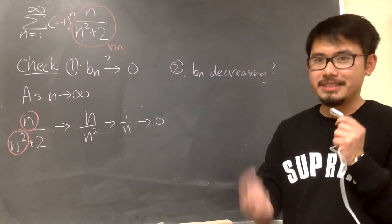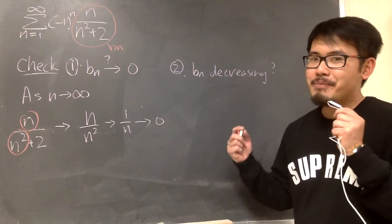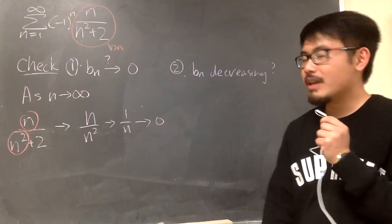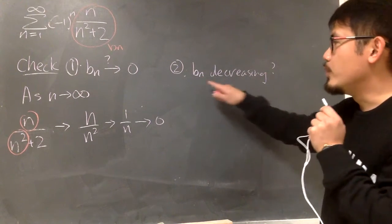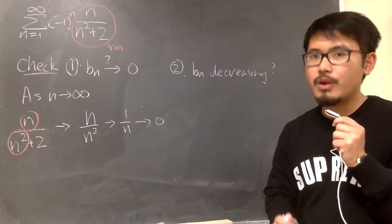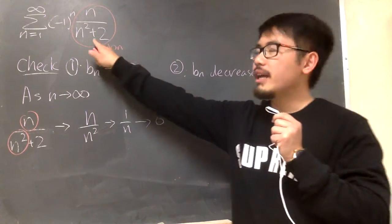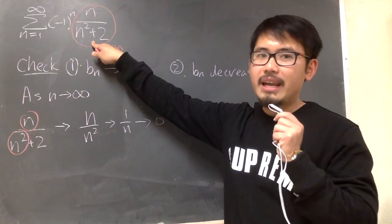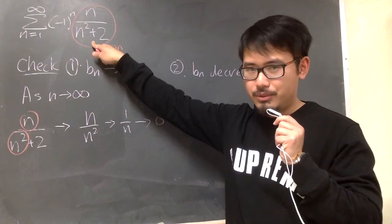For my class, I will let you guys do this. It's okay. All we need is we need to show bn is a decreasing sequence after some n value. What you can do is look at this and then graph it. Graph the function x over x squared plus 2.